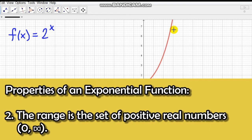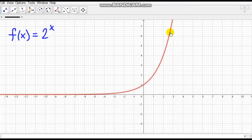Second, the range is the set of positive real numbers from 0 up to positive infinity. As we can see from the graph, it goes down, approaching this side. It gets closer and closer to y = 0, but never reaches that.